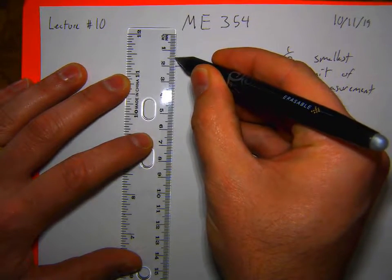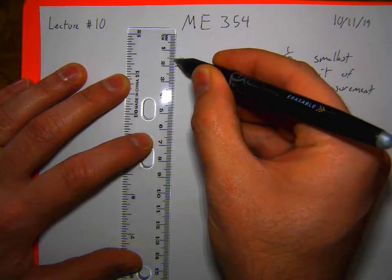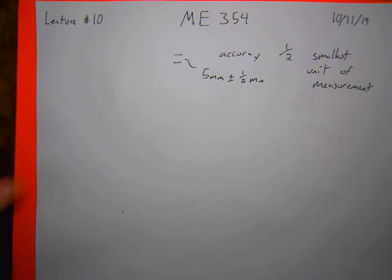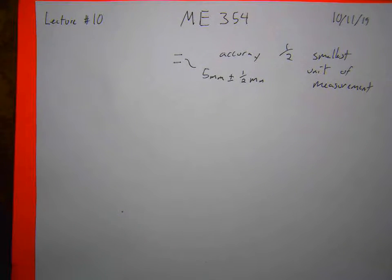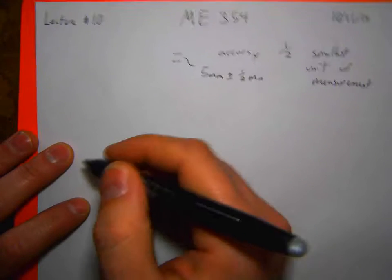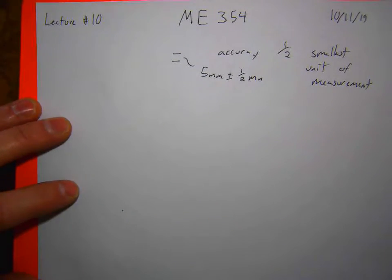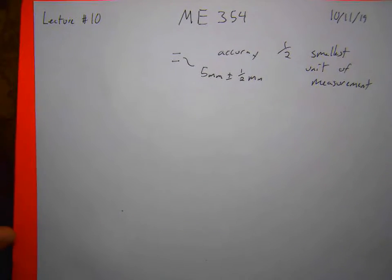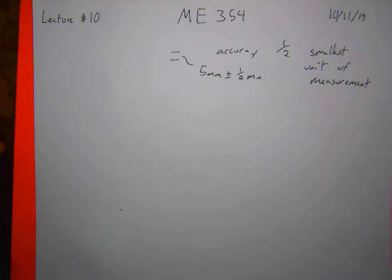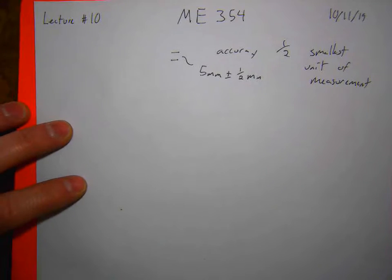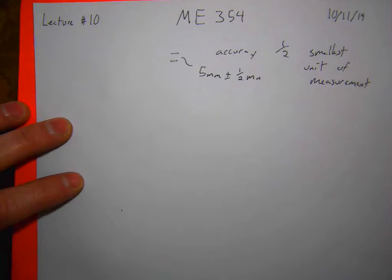I know it's closer to one than the other, but I still can't quite get it. Similarly, for digital readouts, if my digital readout ends at a certain decimal point, you know plus or minus half the certainty of that decimal point.